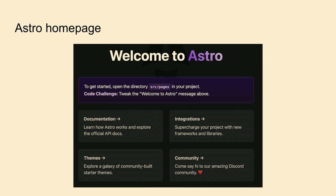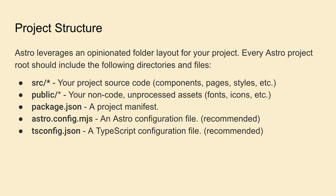This is the default homepage of Astro. The project structure has the `src` folder containing components, pages, styles, and layouts. There's the `public` folder for non-code assets like fonts and icons. Then we have `package.json`, the Astro config file, and `tsconfig`.